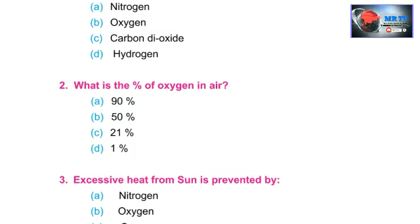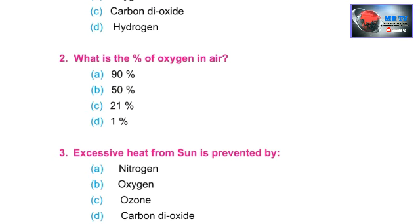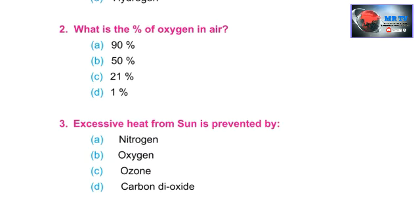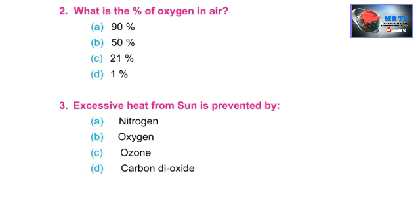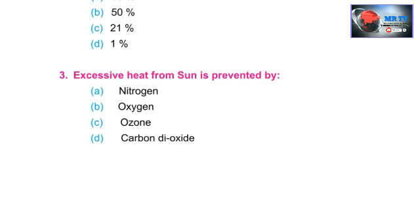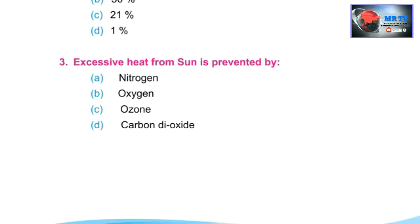Second question: what is the percentage of oxygen in the air? Is it 3%, 9%, 5%, 1%, or 21%? The answer is 21% — oxygen makes up approximately 21% of the air.